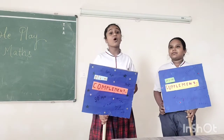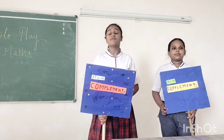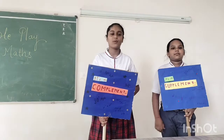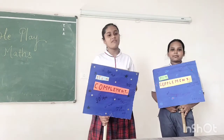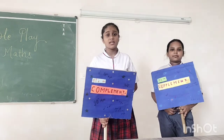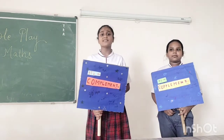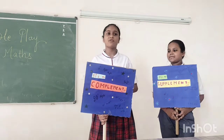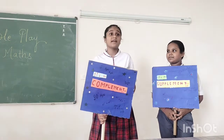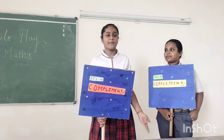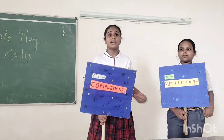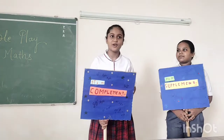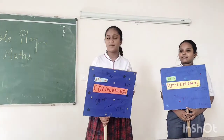I am a complementary angle. I am formed by two acute angles making one right angle. My sum is always 90 degrees. Some examples are 45 degrees plus 45 degrees — it makes its own complement which means 90 degrees. Also 35 degrees plus 55 degrees makes a complementary pair.